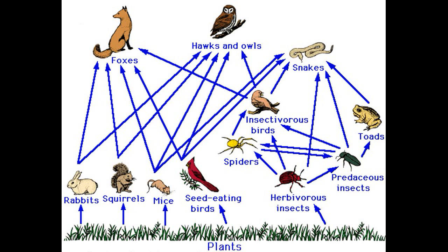Remember from key stage three that a food chain is a very simplistic way of representing relationships between organisms in an ecosystem. The real way to show this would be with a food web, which shows a complete network of relationships between different organisms.